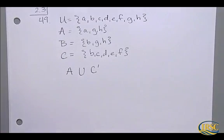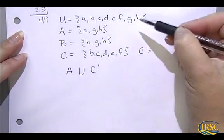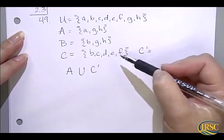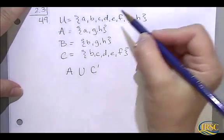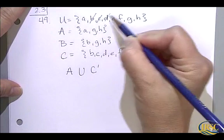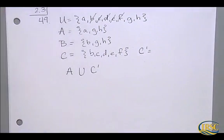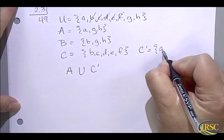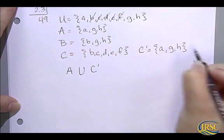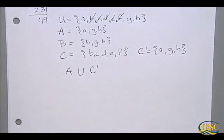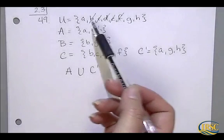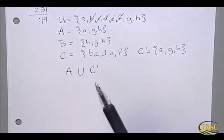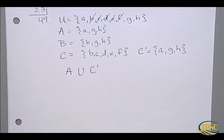Order of operations is really important. There are no parentheses, so the first thing we have to deal with is C complement — we want any elements in the universal set that are not in C. Take your pencil and eliminate B, C, D, E, F, because those are the ones in C. Anything that remains is in C complement: A, G, H. If there were other complements to find, you could erase those pencil marks and keep working without getting confused.